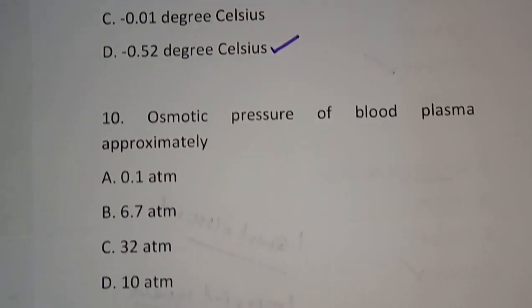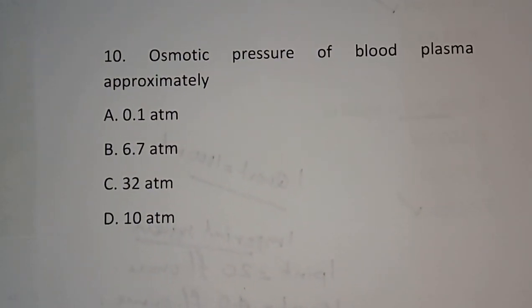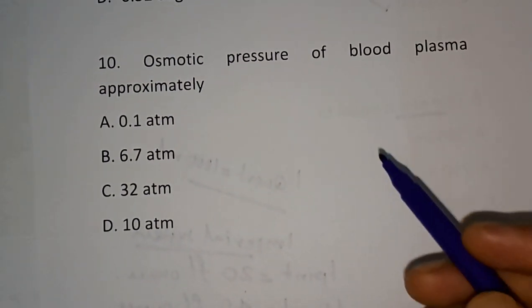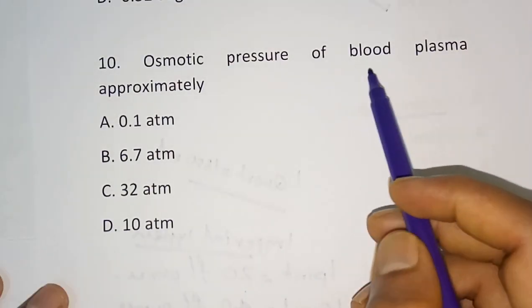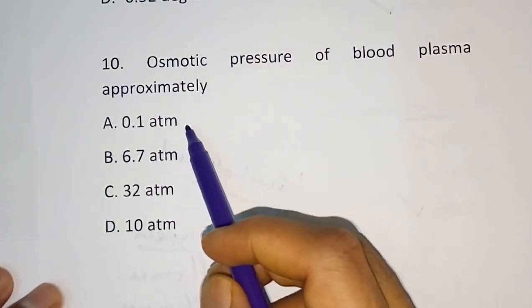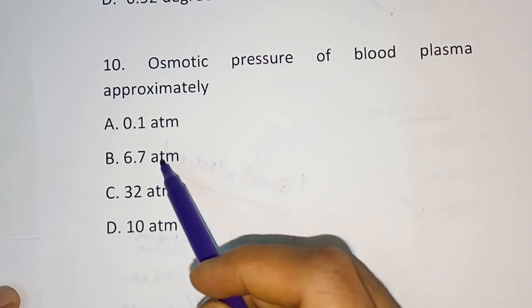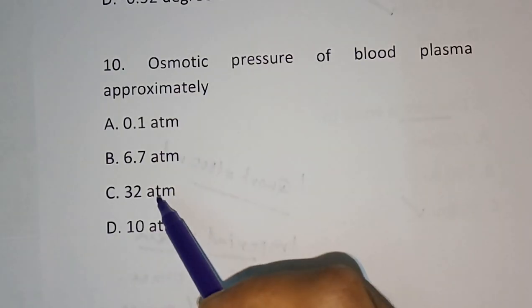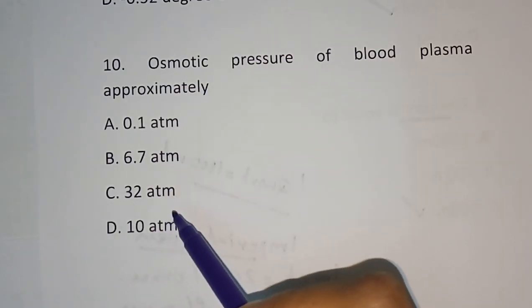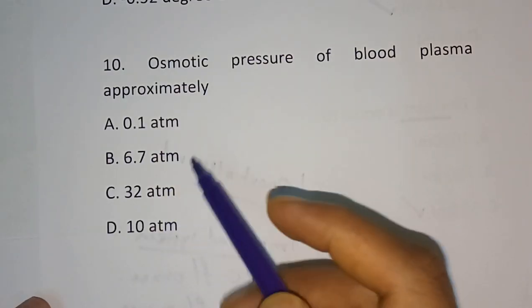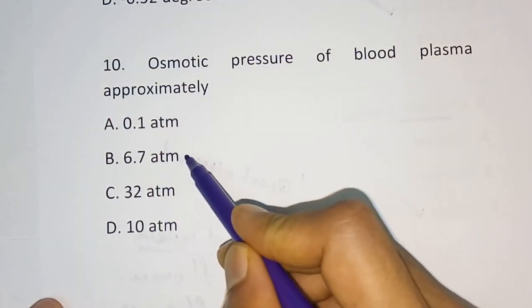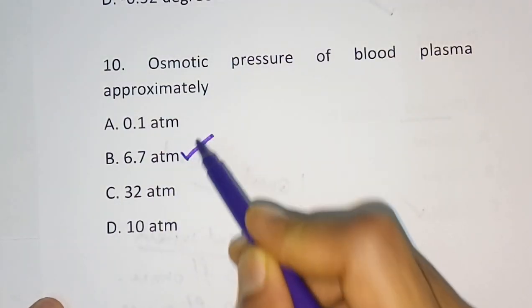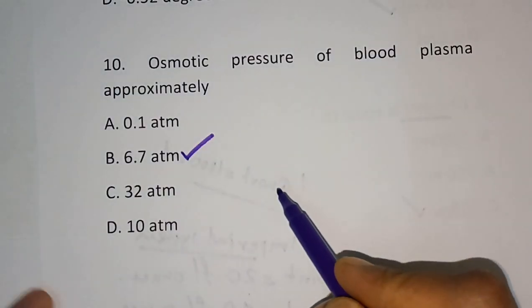Question number 10: The osmotic pressure of blood plasma is approximately? Options are 0.1 atm, 6.7 atm, 32 atm, and 10 atm. The correct answer is option B — 6.7 atm.